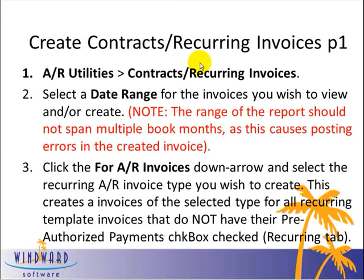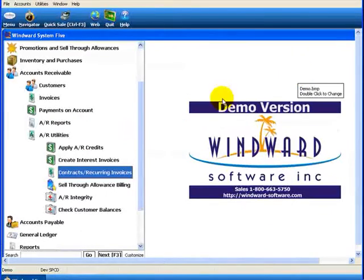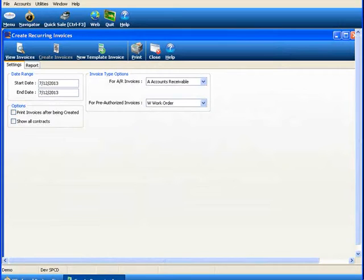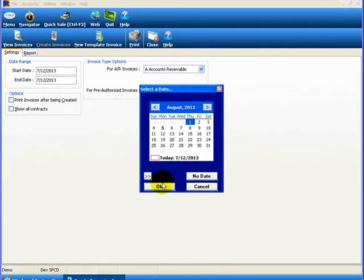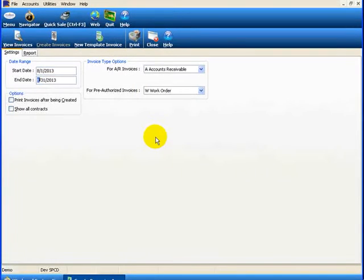The next four slides will explain how to actually create the contract recurring invoices. The first step is to find the AR Utilities Contract Recurring Invoices in the navigator menu as before. The first area to select is a date range for the invoices you wish to view and/or create. There is a note in the help topic documentation that the range of the report should not span multiple book months, as this can cause posting errors in the credit invoice. So I will do invoices for August — August 1st through August 31st — and we'll have a view of what invoices are out there for that time period.